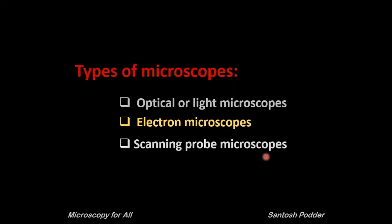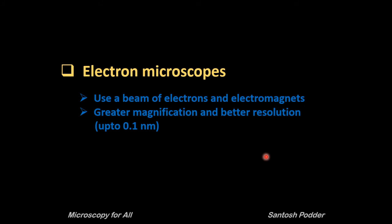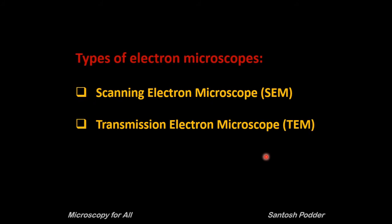Now we will move to electron microscopes — the second type of microscope. Electron microscopes use a beam of electrons and electromagnetic lenses rather than visible light or glass lenses used in optical microscopes. The shorter wavelength of the electrons allows greater magnification and better resolution, down to 0.1 nanometers. There are two types: scanning electron microscopes and transmission electron microscopes.